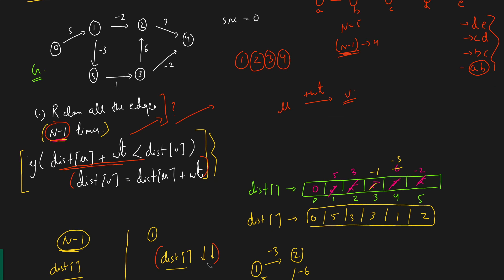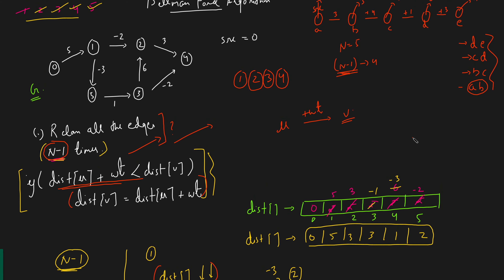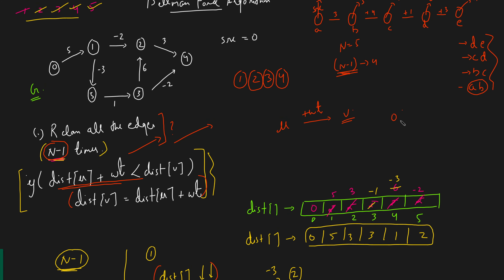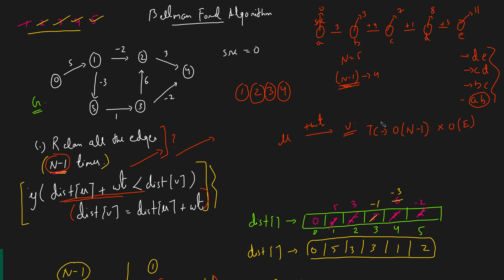The time complexity of Bellman-Ford is O((n−1) × E), which is quite high compared to Dijkstra, but it has the advantage of detecting negative cycles. The space complexity is O(n) for the distance array.